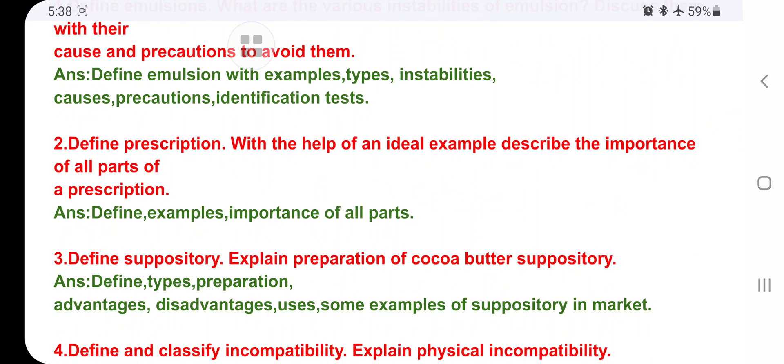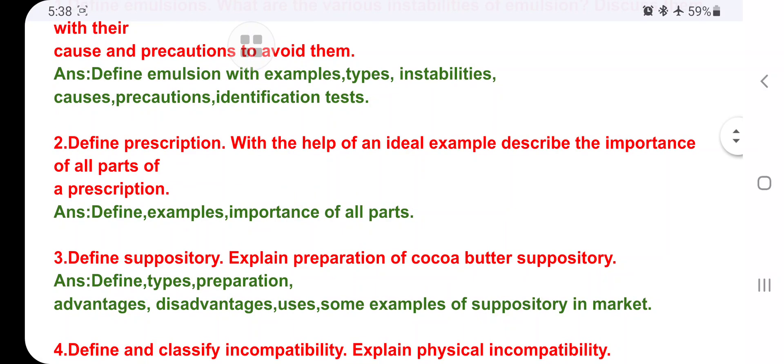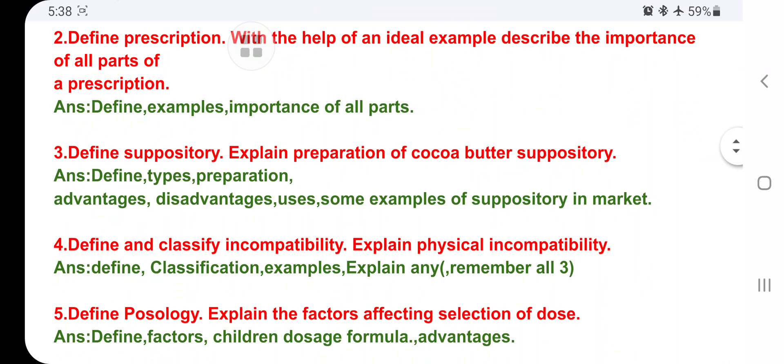Identification tests like fluorescent test and dye test - these all tests you have to write in 10 marks. Then define prescription: With the help of an ideal example describe the importance of all parts of prescription. First define what is a prescription, give an example of the prescription, and write the importance of all the parts. First write those parts then explain one by one. Example is very important - you have to draw one prescription diagram.